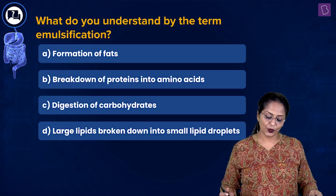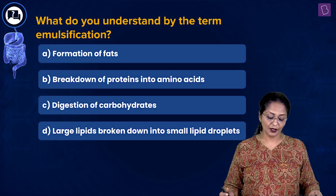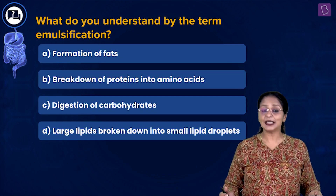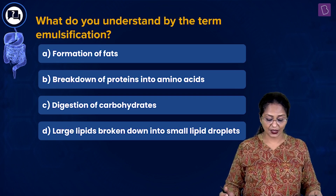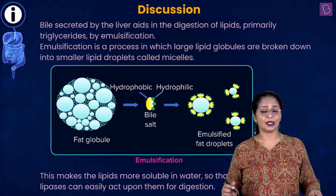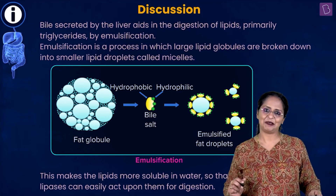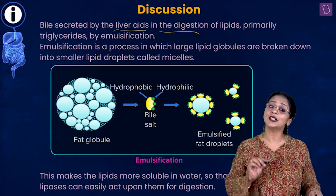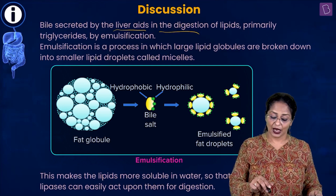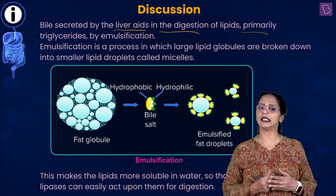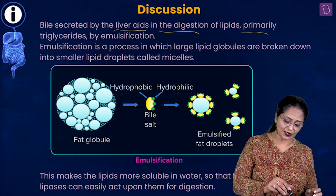A new question: what do you understand by the term emulsification? A: formation of fats, B: breakdown of proteins into amino acids, C: digestion of carbohydrates, or D: large lipids broken down into small lipid droplets. To understand emulsification, we need to know about bile — a juice secreted by the liver that helps in the digestion of fats or lipids — through a process called emulsification.